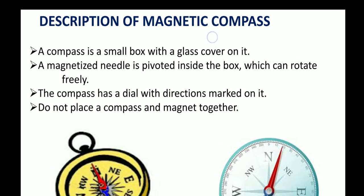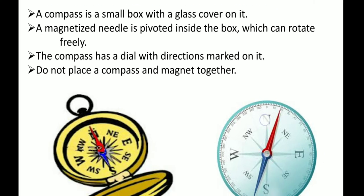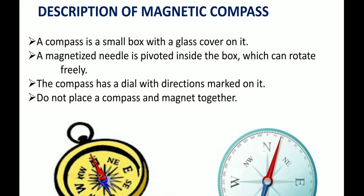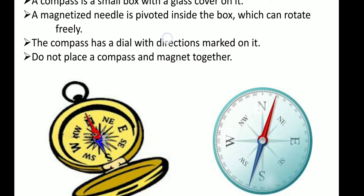Coming to the description of a magnetic compass. A magnetic compass is a small box with a glass cover on it. A magnetized needle is pivoted inside the box, which can rotate freely. Inside the box you can see a needle. The compass has a dial with directions marked on it.